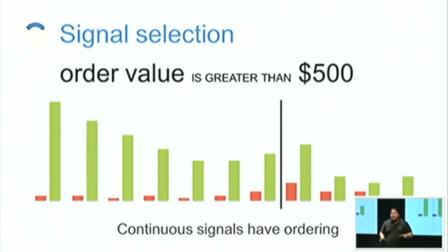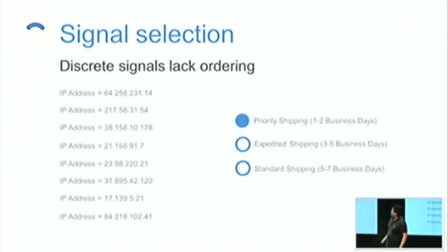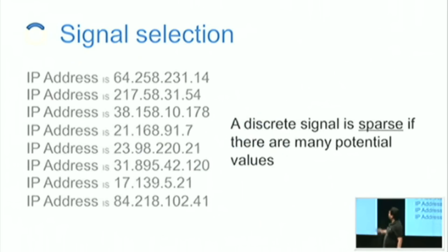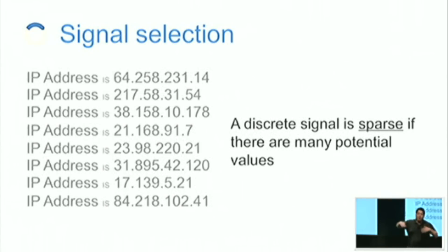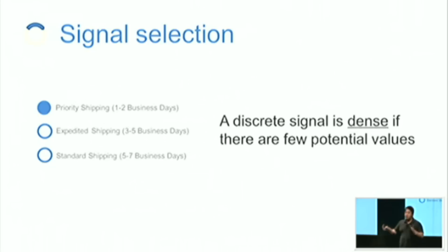There are two types of signals. Continuous signals have ordering — for example, order value greater than $500, with a range from $0 to infinity and a natural ordering. Discrete signals don't have ordering, and there are two types. Sparse discrete signals have many possible values — IP addresses, for instance: with IPv4 there are four billion possible addresses. Because you see little activity per IP address, it's harder to train on. The other type is dense discrete signals, where values converge — shipping type, for example, with only three possible values. This whole selection of signals is a critical driver of accuracy.